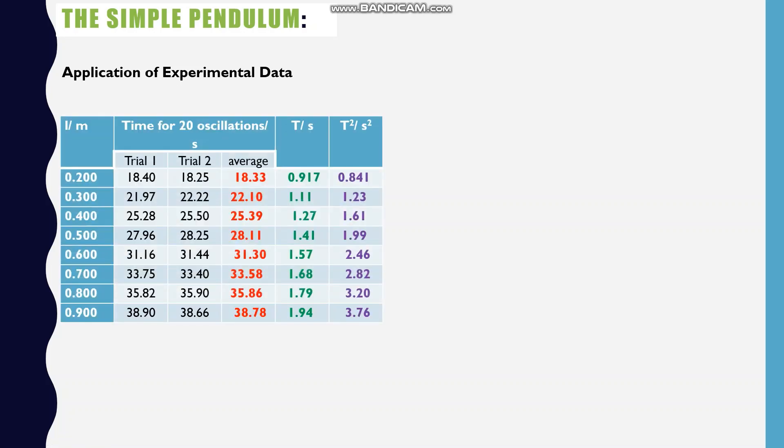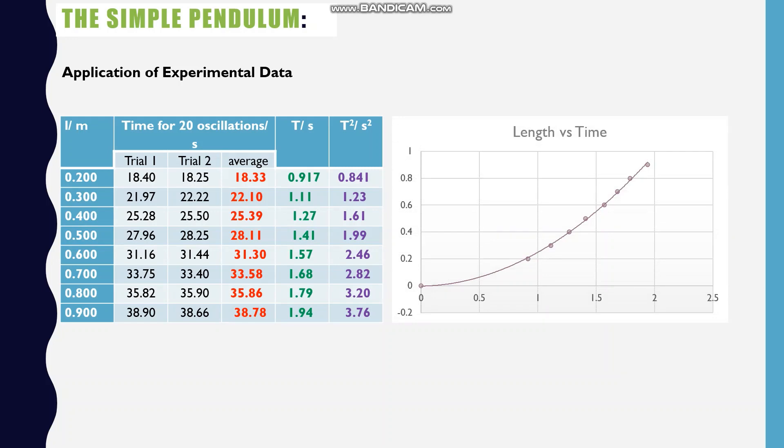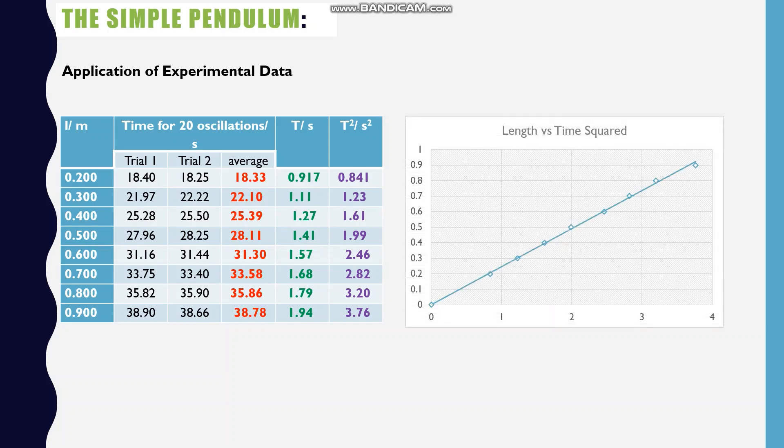Here is our table. And the first graph is L against t. And what we see is that it's a curve going upwards, so the relationship between L and t is not linear. L and t are proportional to each other, but not in a direct way.